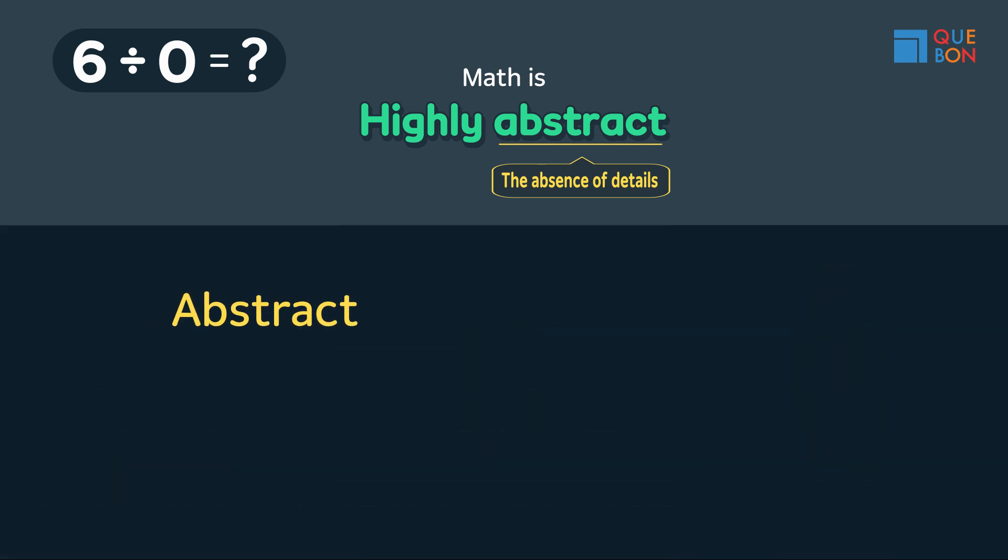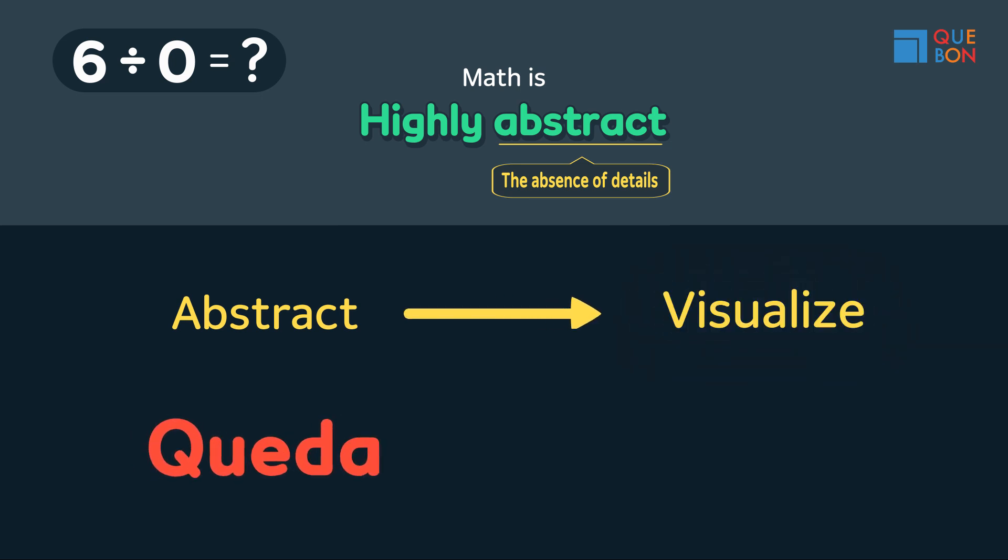In math, we enhance our senses by giving shape and form to abstract things in order to create a more visual image.